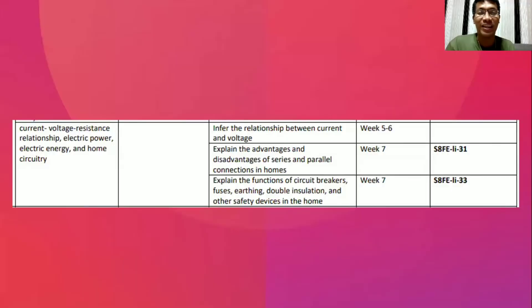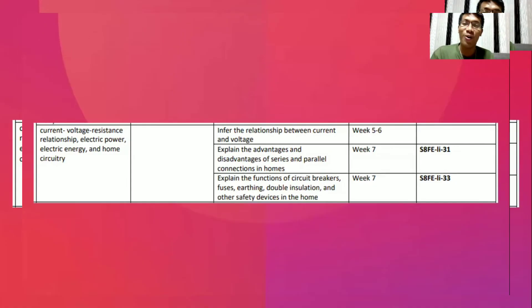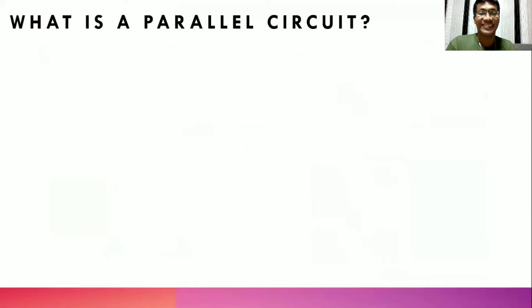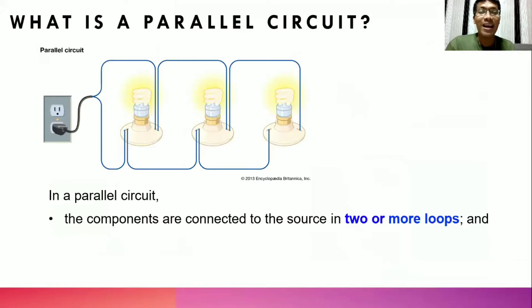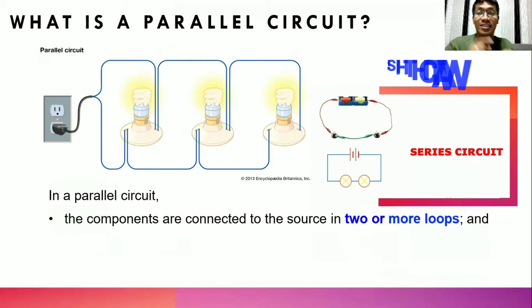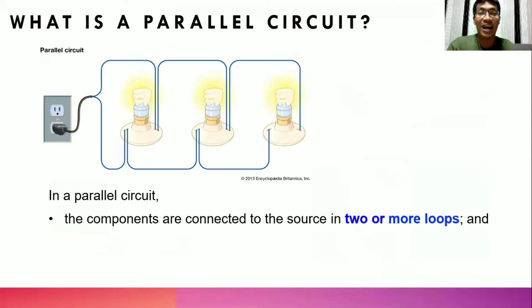Our objective is to explain the advantages and disadvantages of parallel connections in homes. What is a parallel circuit? It looks like this one. In a parallel circuit, the components are connected to the source in two or more loops.